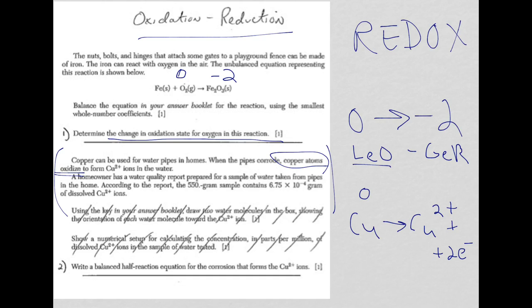So, now I have my balanced half reaction. Again, balanced in terms of mass and charge. One copper on the left, one on the right. Zero charge on the left, a plus two and a minus two on the right, adds up to zero.